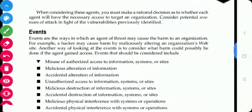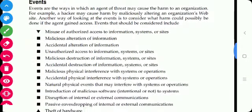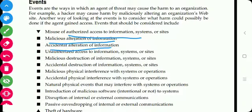There are various events through which an agent or threat may cause harm to an organization. These events may include: misuse of authorized access to information, malicious alteration of information, accidental alteration of information, malicious destruction of information, threats to hardware, introduction of malicious software, and natural or physical events that may interfere with system operations.